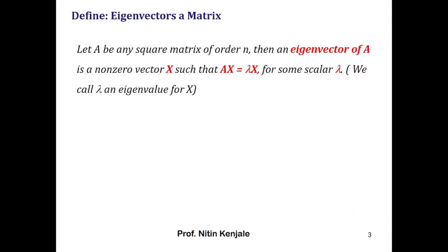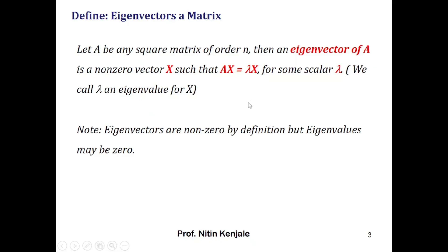Let A be any square matrix of order n. The eigenvector of matrix A is the nonzero vector x such that the equation Ax = λx holds for eigenvalue λ of A. Note that eigenvectors are nonzero by definition, but eigenvalues may be zero — you can have a zero eigenvalue, but the corresponding eigenvector must be nonzero.